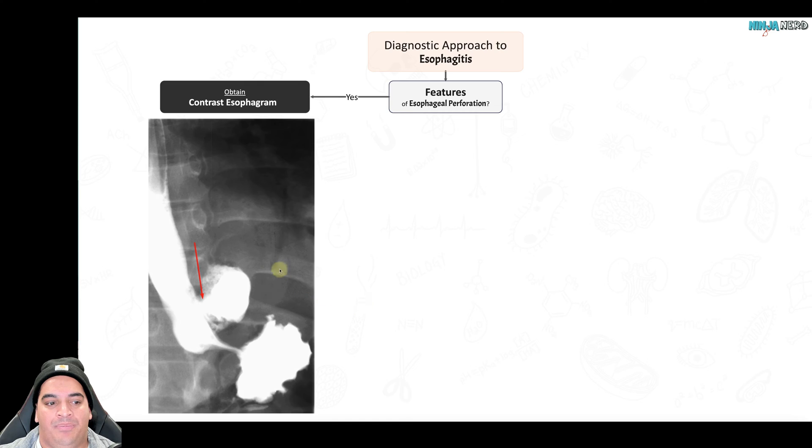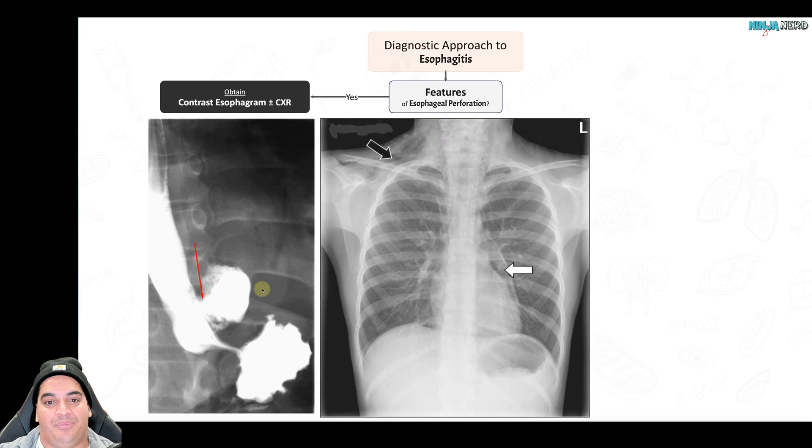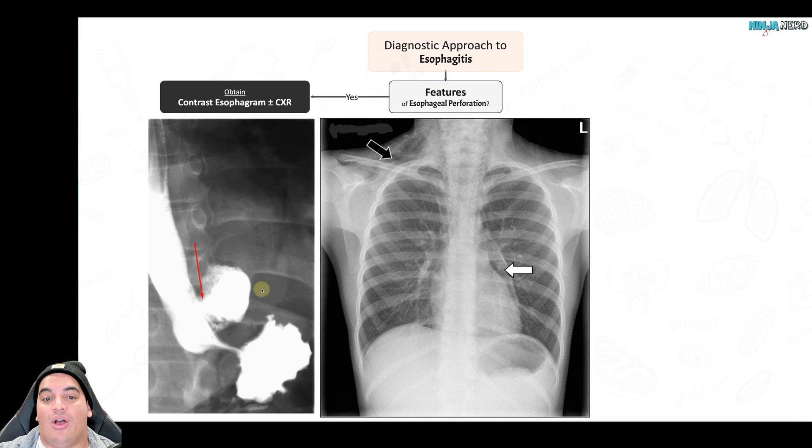If they do, the gold standard test is a contrast esophagram. The reason why is if I do this contrast, usually with gastrografin, they ingest this gastrografin, it moves down into the esophagus, and you'll see the contrast leaking here into the mediastinum. That's definitely going to show you they have an esophageal perforation, and my treatment's going to differ a lot with that.